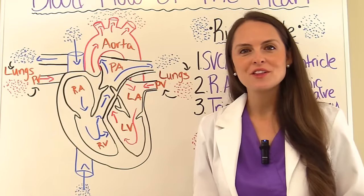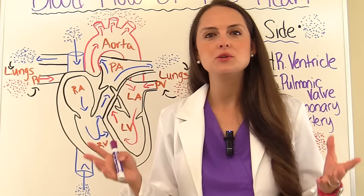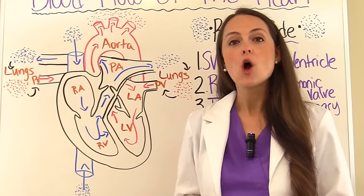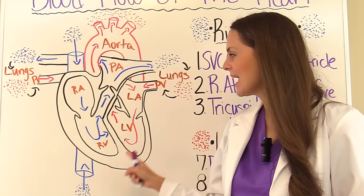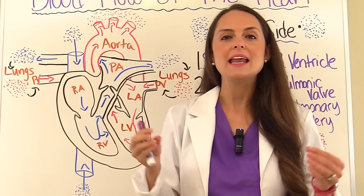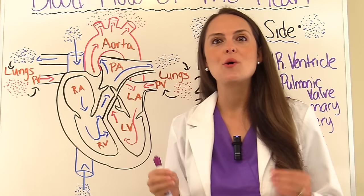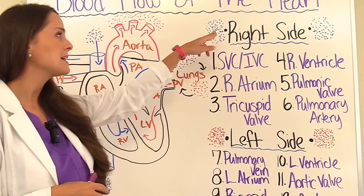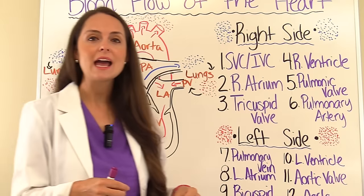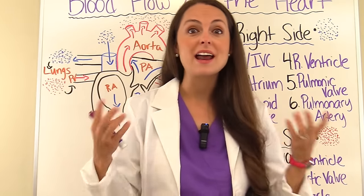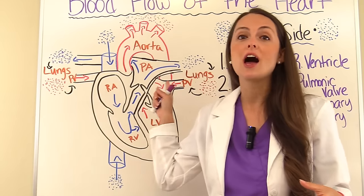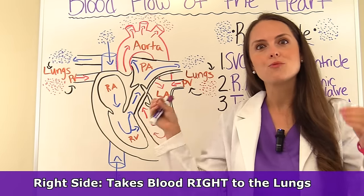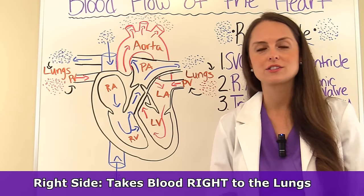To easily understand the blood flow of the heart, you want to divide the heart into two sides. We have the right side of the heart and the left side of the heart, and each of these sides has its own mission. The mission of the right side of the heart is to take the unoxygenated blood that it received and get it to the lungs. So the right side is going to take the blood right to the lungs to get oxygenated.